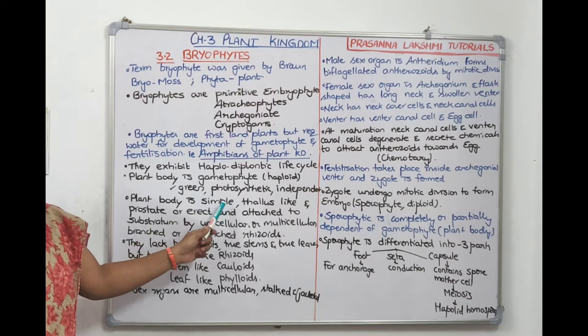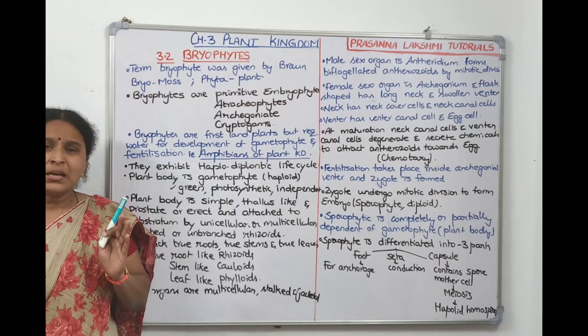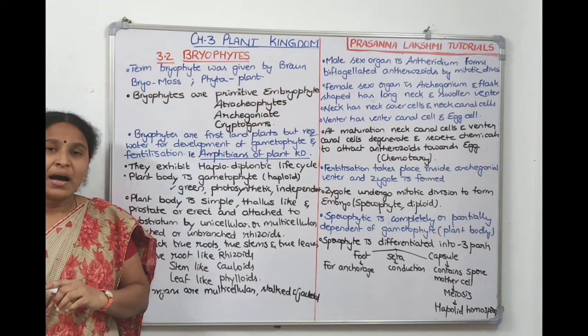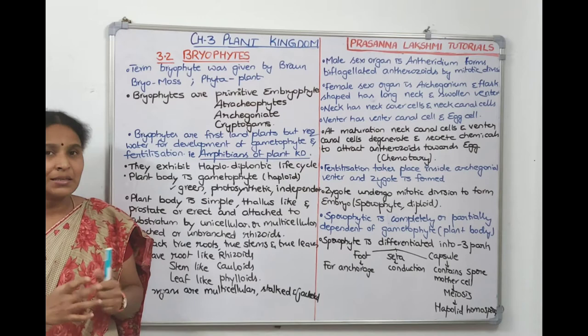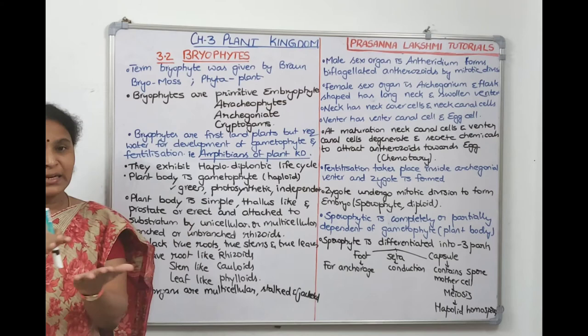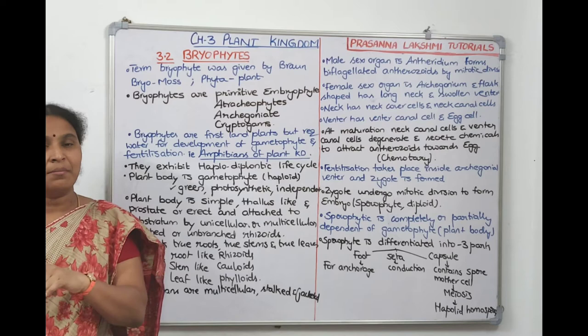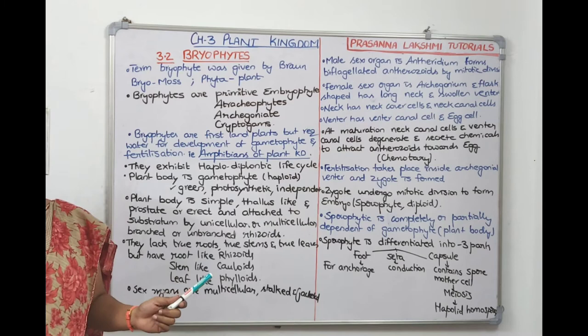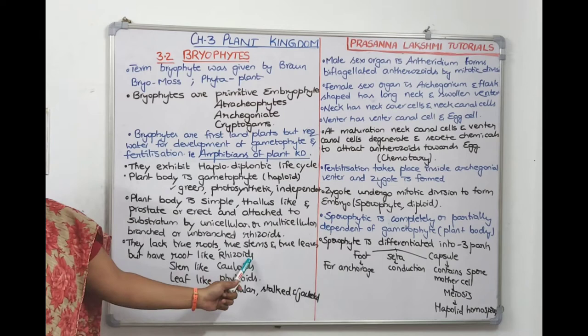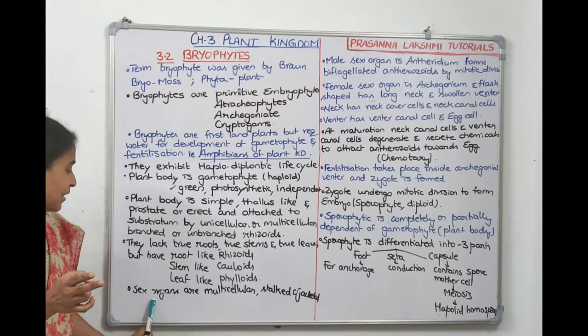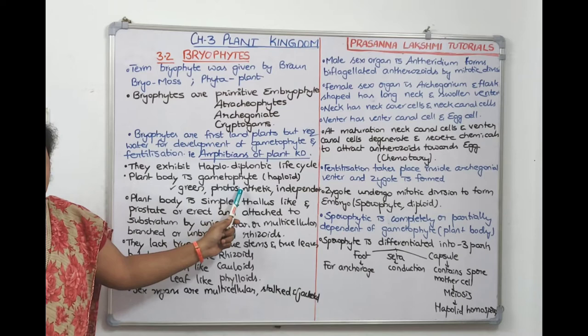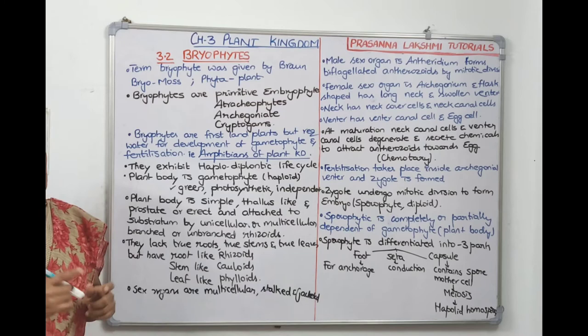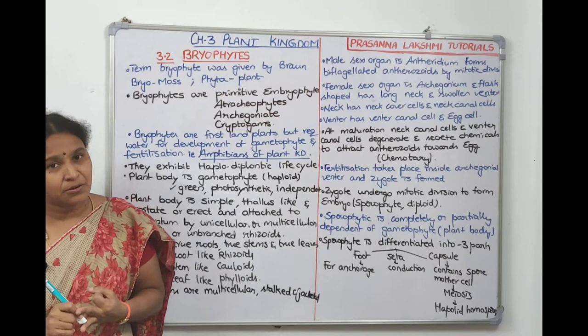The sex organs of bryophytes are jacketed, multicellular, and stalked. The male sex organ is called antheridium (club-shaped); the female sex organ is called archegonium (flask-shaped). These are on the gametophyte itself.